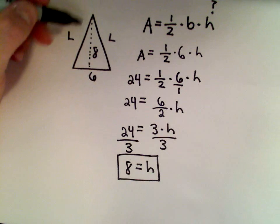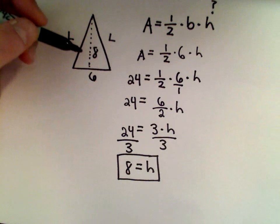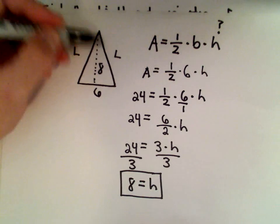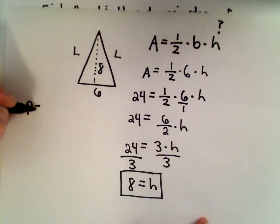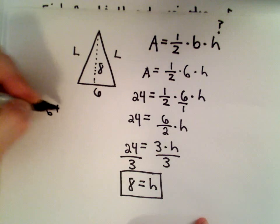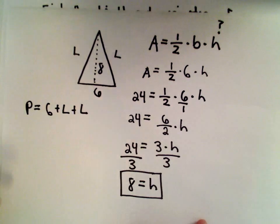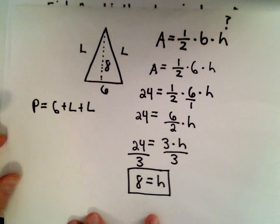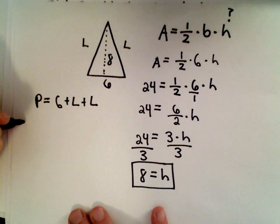Well, that still doesn't tell me the side lengths, right? And to get the perimeter, I would take 6 plus this side length plus this side length. The perimeter is just the distance around. But again, the problem is I don't know L. So what I'm going to do to find L in this case is I'm going to use the Pythagorean theorem.